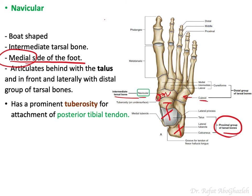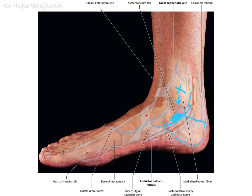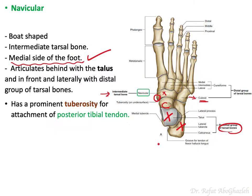The navicular bone has a tuberosity that protrudes medially — the navicular tuberosity — which you can feel on the medial side of your foot. It serves as the attachment for the posterior tibial tendon. It is located just anterior to the sustentaculum tali of the calcaneus.